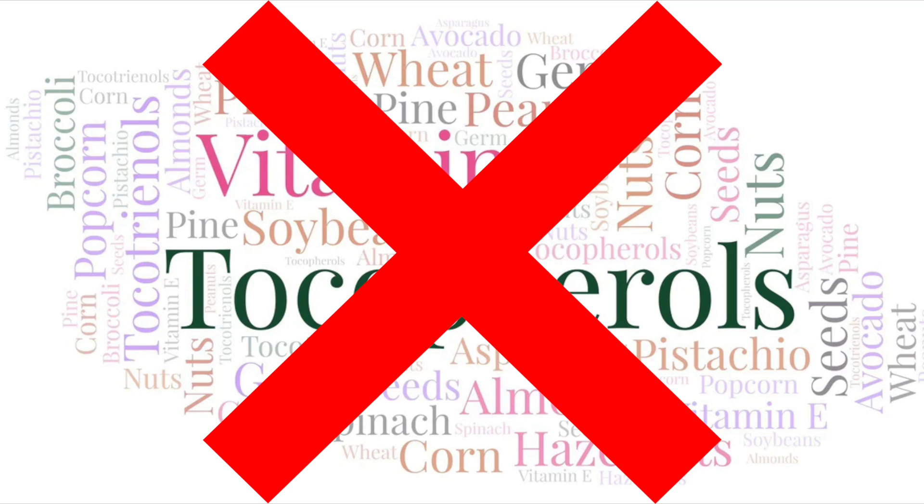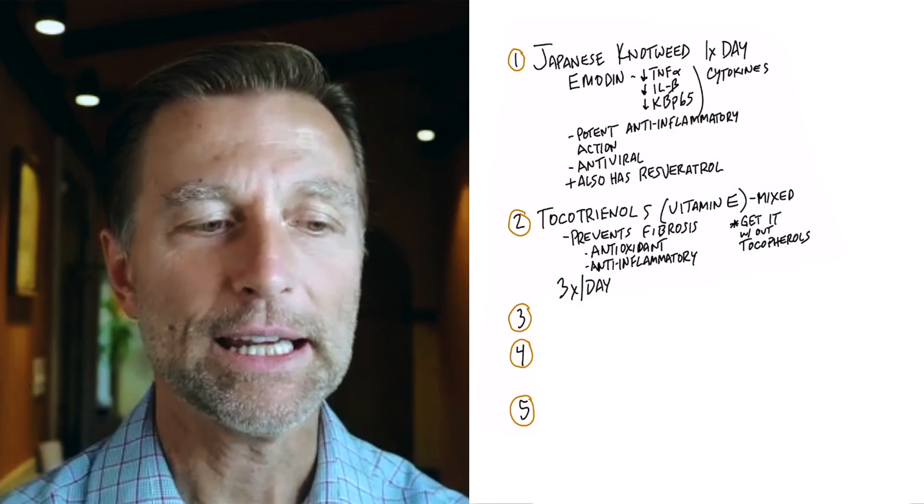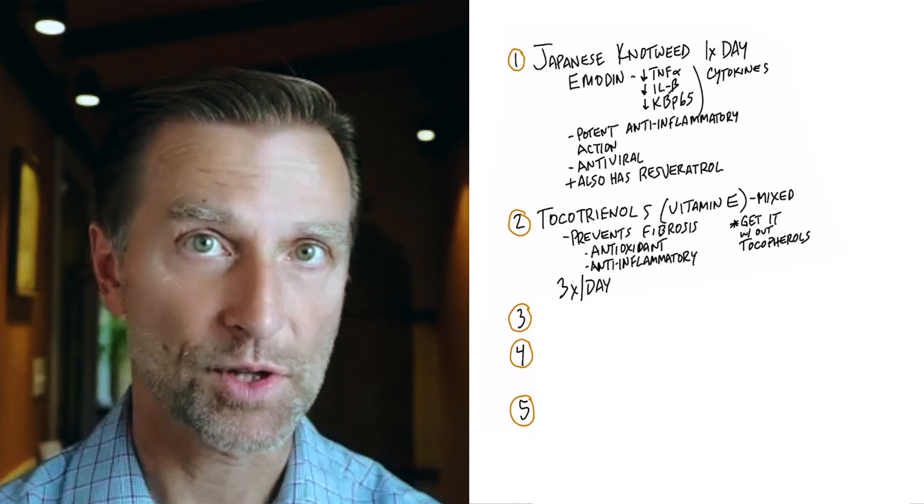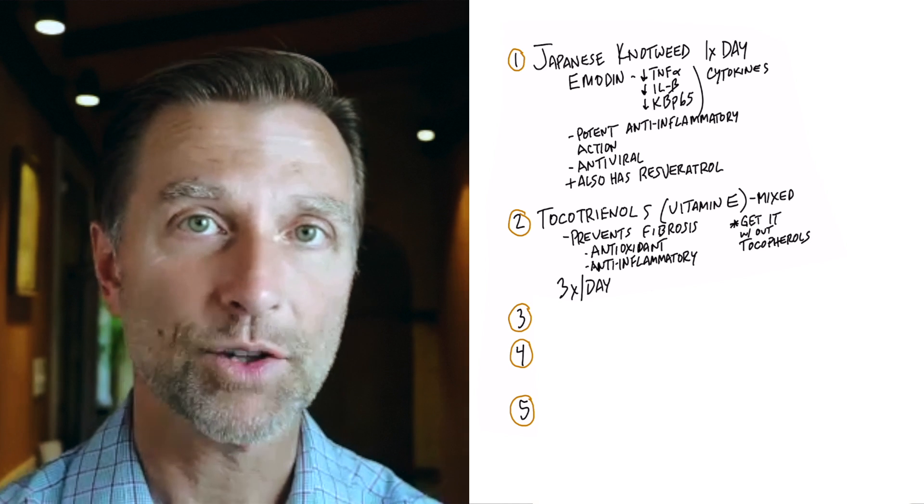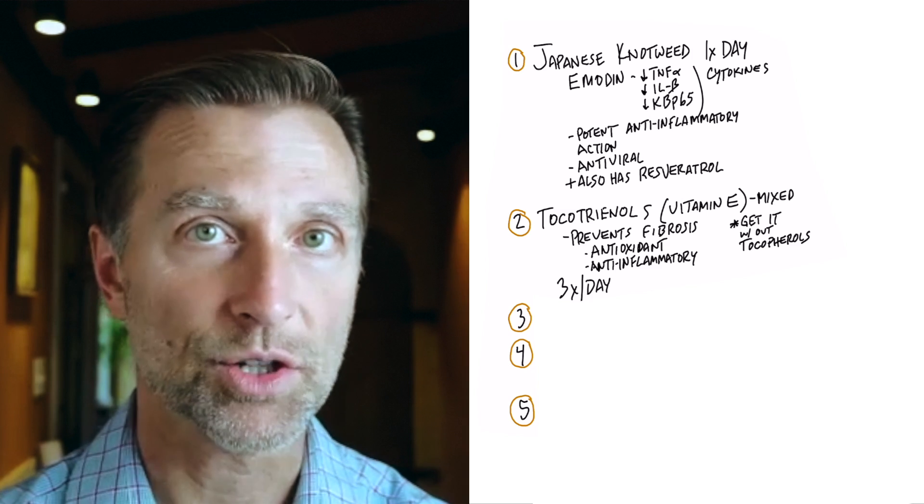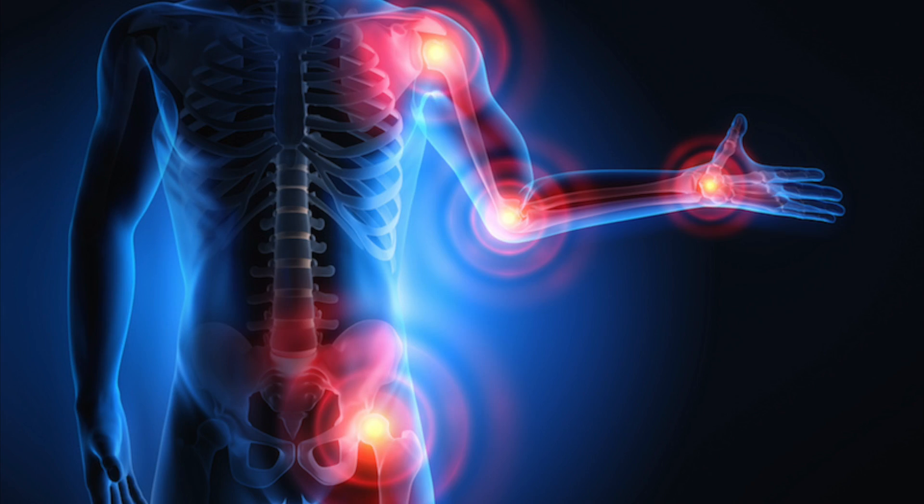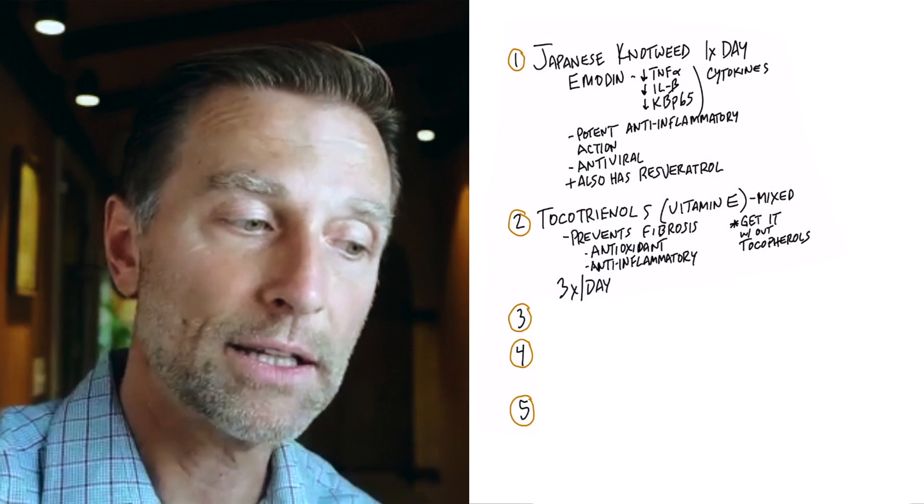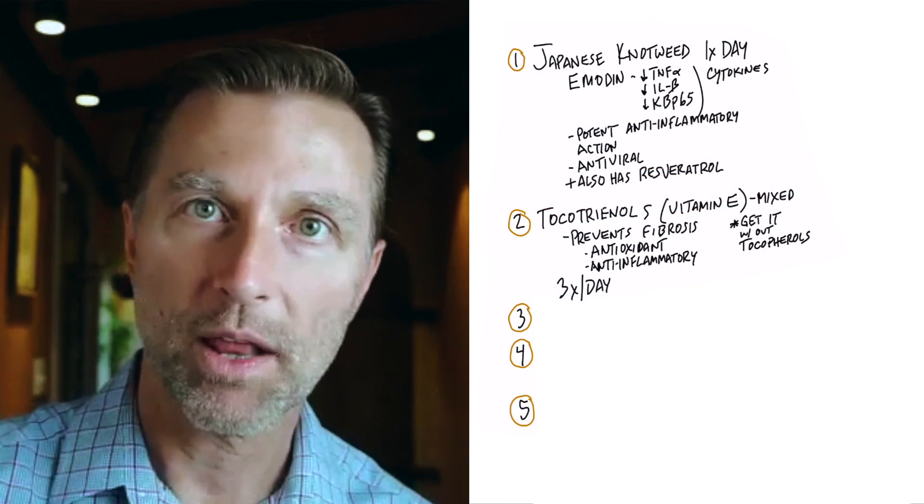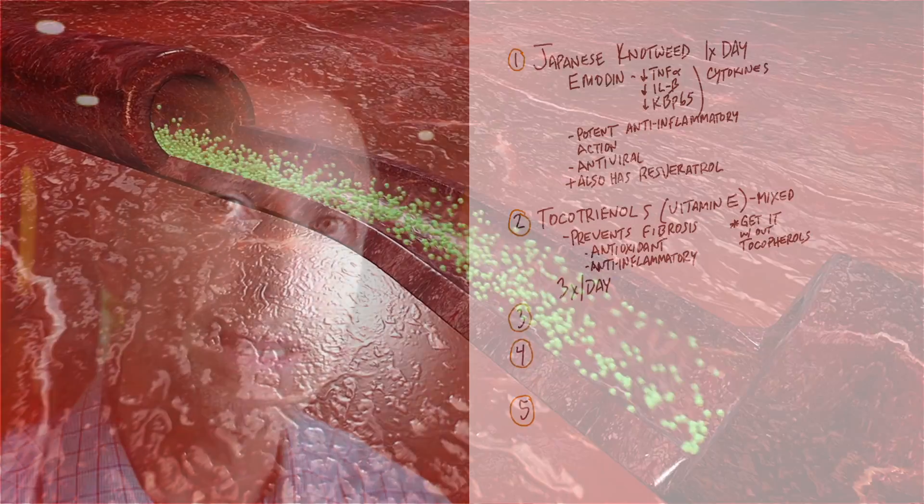Now, the question is why? Tocotrienols has some very interesting properties. It can help inhibit fibrosis. So if you have inflammation in your heart muscle, the worst thing you can get is scar tissue. So this can potentially help prevent that formation. Plus, it has a powerful anti-inflammatory action. So combining decreasing inflammation, as well as stopping the conversion from inflammation to fibrosis is a really good thing.